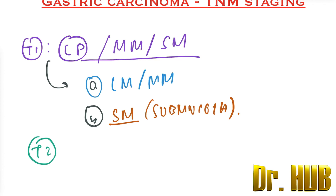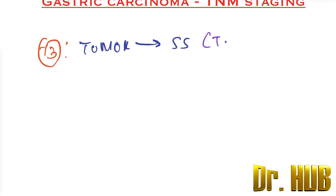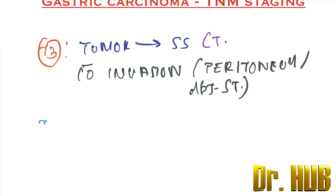T2 means the tumor invades the muscularis propria. T3 means the tumor penetrates the subserosa connective tissue (SS), without invasion of the visceral peritoneum or the adjacent structures.